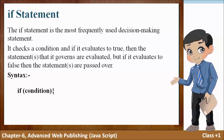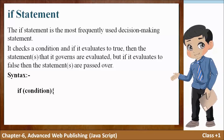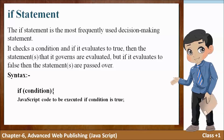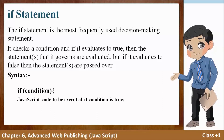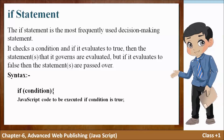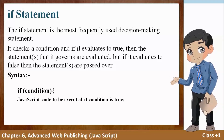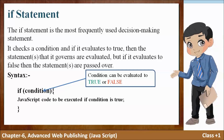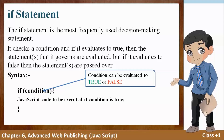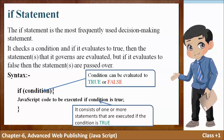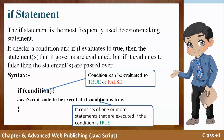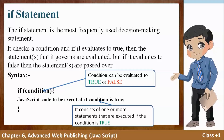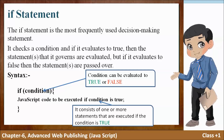Next is syntax. Sabse pehle if statement ko likha jaata hai, uske aage round bracket mein condition ko likha jaata hai, uske baad open curly bracket lagaya jaata hai aur uske andar JavaScript ka woh code likha jaata hai jo agar condition true hogi toh execute hoga, uske baad close curly bracket. Condition ka result ya toh true ho sakta hai ya false. JavaScript code jo curly bracket mein likha hai usme ek ya ek se zyada statements ho sakti hain jo execute hongi agar condition true hai.